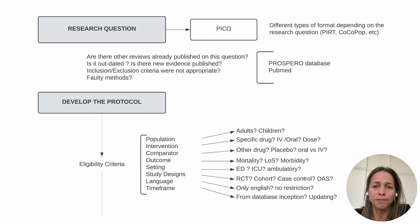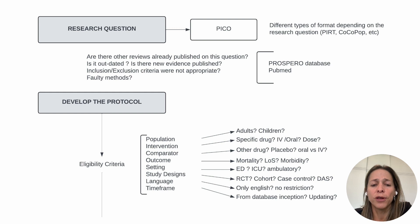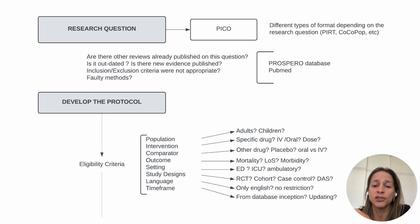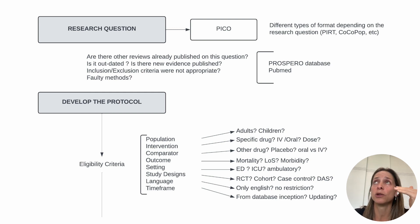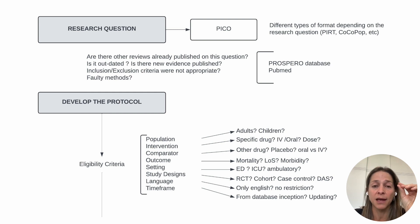After you have defined your research question, you will need to develop the protocol. For this, you need to define your eligibility criteria — the population you're going to include, such as adults or children; the intervention, for example a specific drug, whether it is IV or oral; the comparator; and the specific outcome. You need to specify which outcomes you're looking for, usually mortality, length of stay, or need for intubation.